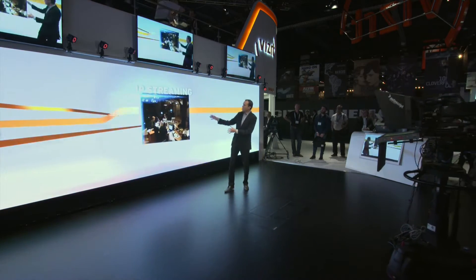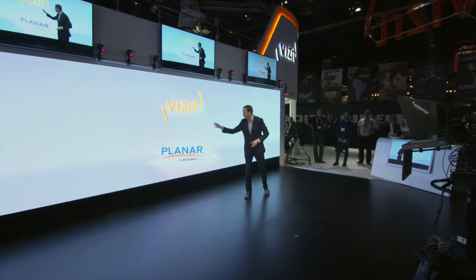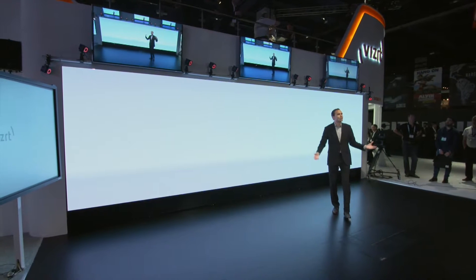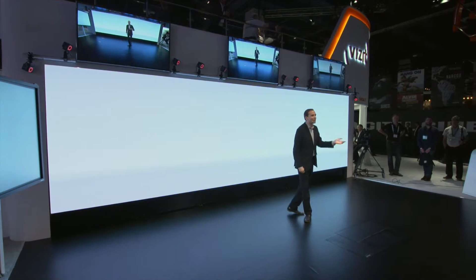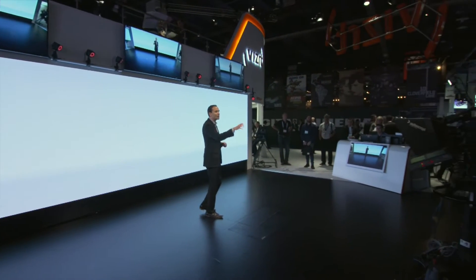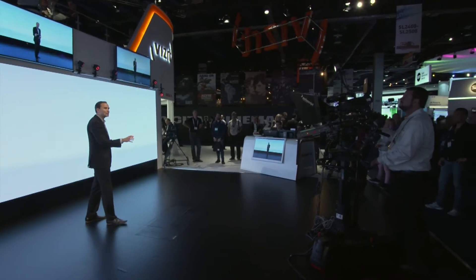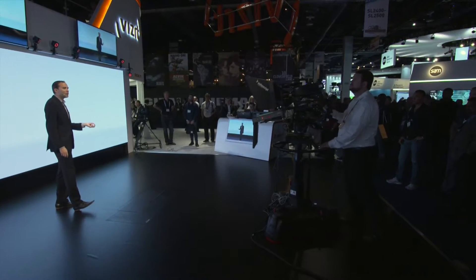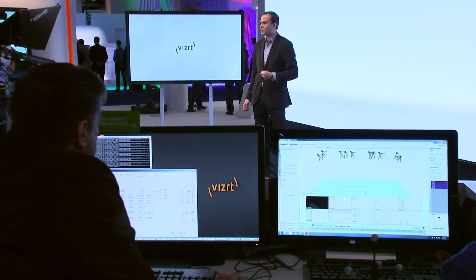Just behind me, I have this massive video wall from Layer. This is a 7.2 meter video wall, and we're going to be using this wall to show off virtual graphics, virtual sets, and also some election content that we'll have in the studio. Just in front of me, I have a camera on a Shotoku pedestal, and this is a mechanical tracking system. As the camera moves around the studio space, we're going to be able to send all that movement information over to our Viz Virtual Studio software.